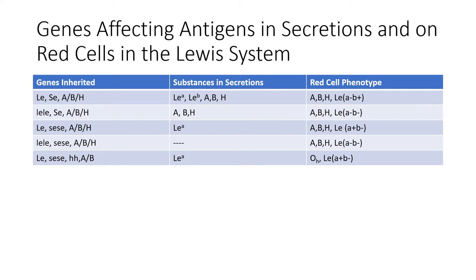The last row shows someone with the Bombay phenotype and a capital LE gene, lowercase SE gene and normal A and B genes. They would produce Lewis A antigens in secretions and on red blood cells. They would not have A or B antigens in secretions since they don't have the capital SE gene, and they can't produce A and B antigens on the red blood cells because they don't have the capital H gene.